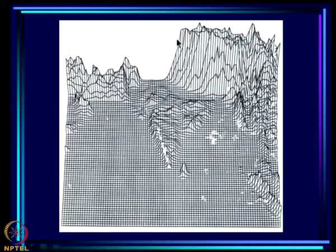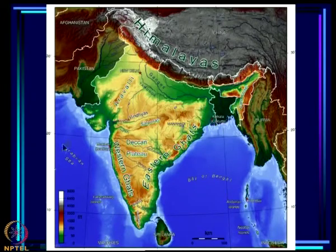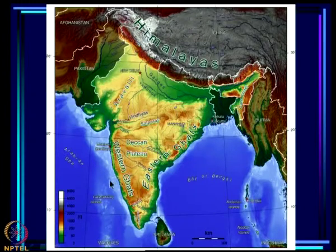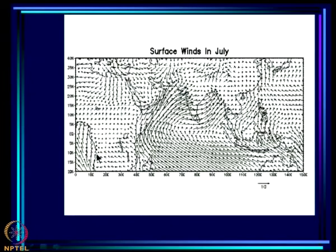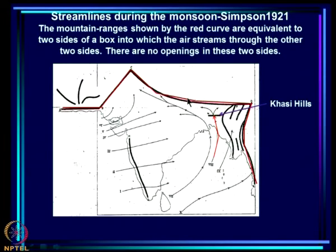An important element of Simpson's theory is the peculiar topographic distribution — the Tibetan Plateau to the north, the Western Ghats, and hills in the northeast. You have the Himalayas to the north, high mountains on the Burmese coast, the Western and Eastern Ghats, and the Vindhyas and Aravalis. The surface winds during the monsoon come almost at right angles to the Western Ghats.